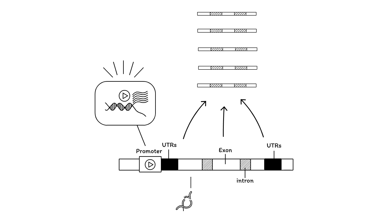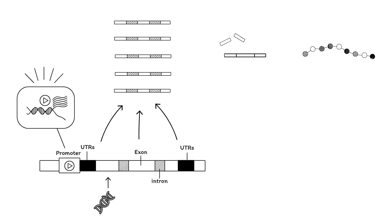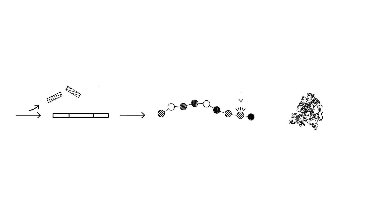If a variant is located within an exon, the translation of the mRNA into a polypeptide could be different, creating an altered protein.